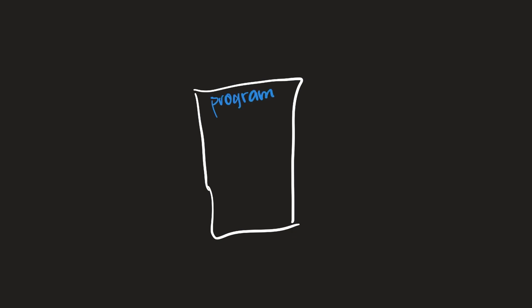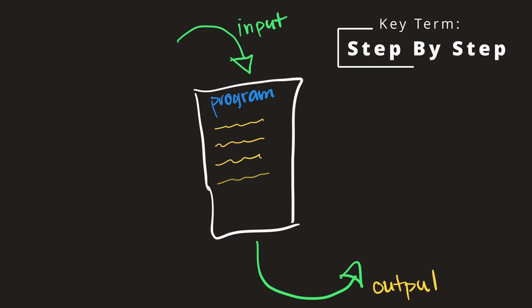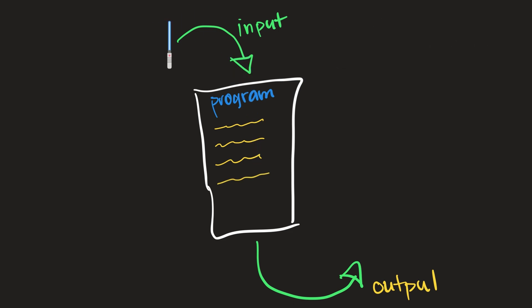If we have our program here, we can represent input with this arrow and output with this arrow — the data flows into our program, through our program, and out. Each spell provided by our programming language will be performed step by step. So if we get some input like the image file, that data flows into the application and we have the power at each step to work with it in any way we please.